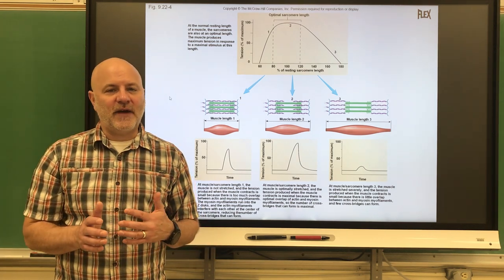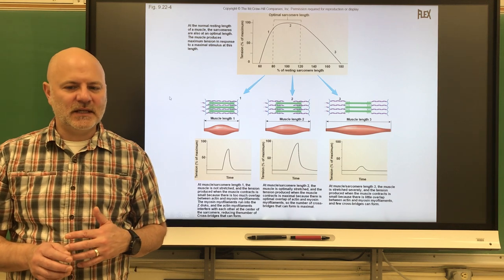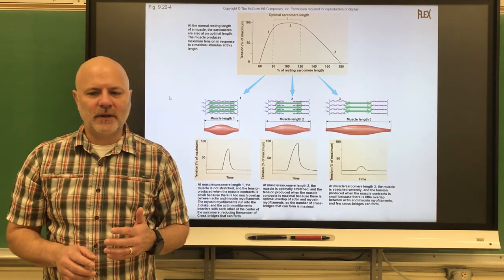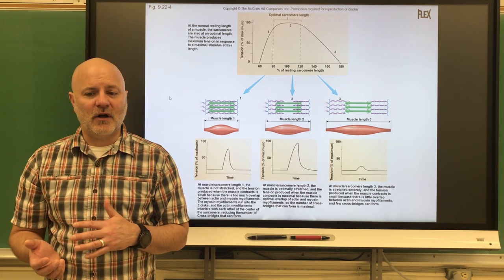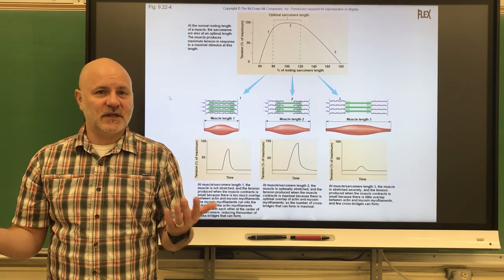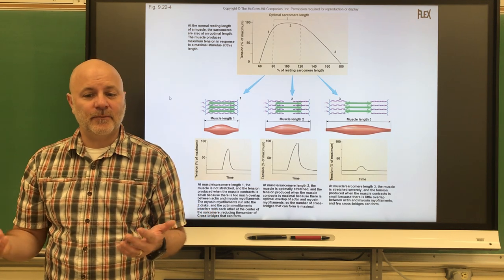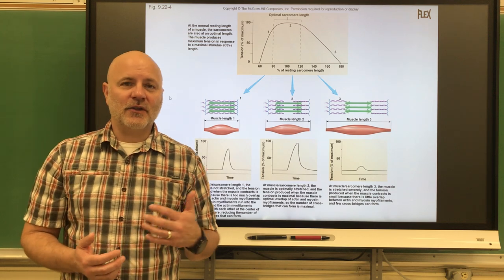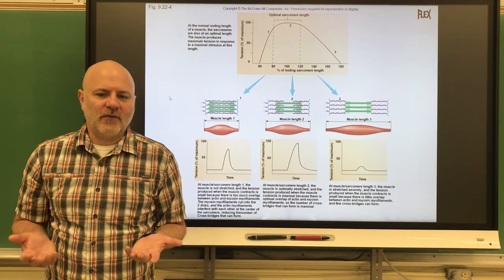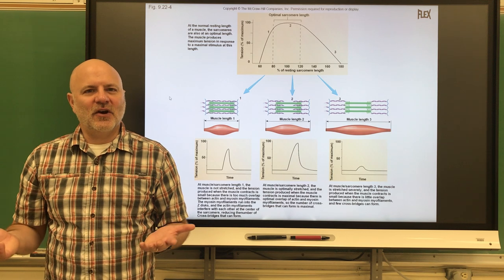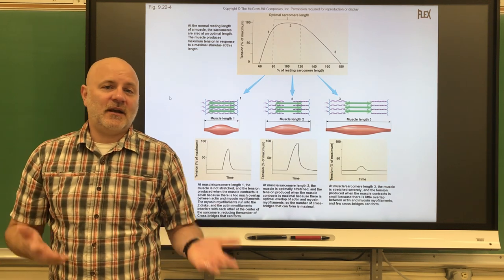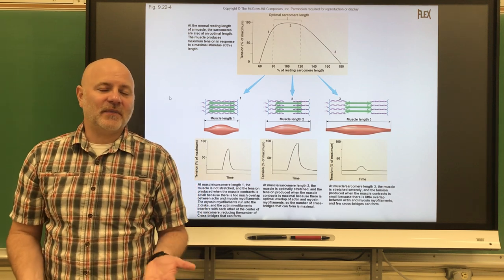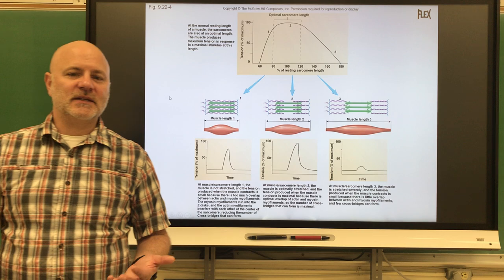Let's look at the velocity and duration of contraction. Muscles vary on how fast they can contract and for how long before they fatigue. One factor is recruitment — the more motor units involved, essentially more muscle fibers, the faster and more prolonged the contraction will be. Another factor is load, or resistance to the muscle. The greater the load, the slower and shorter the contraction. If you're lifting something heavy, it takes longer and you can only sustain it briefly compared to lifting something lighter.